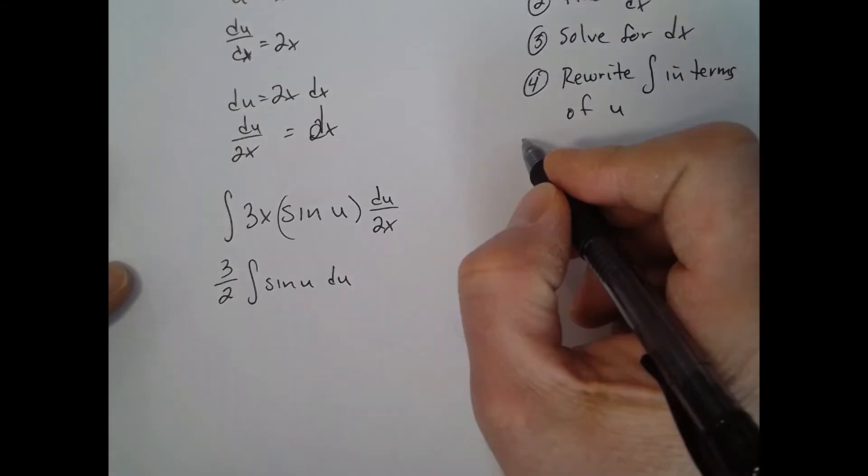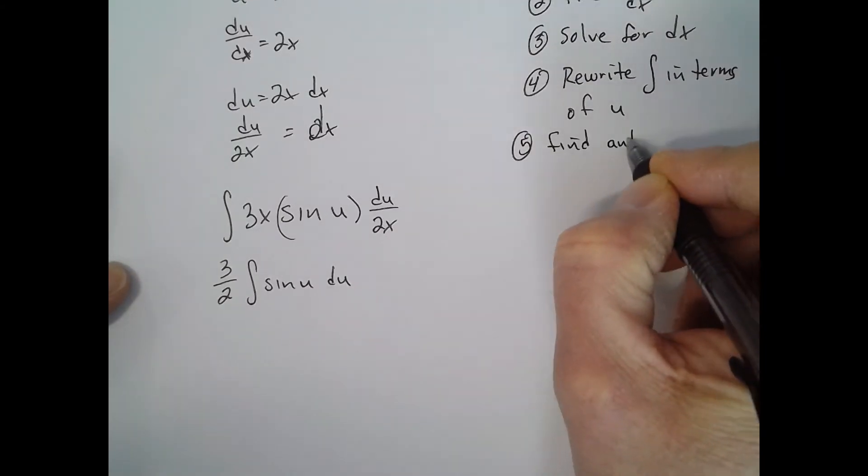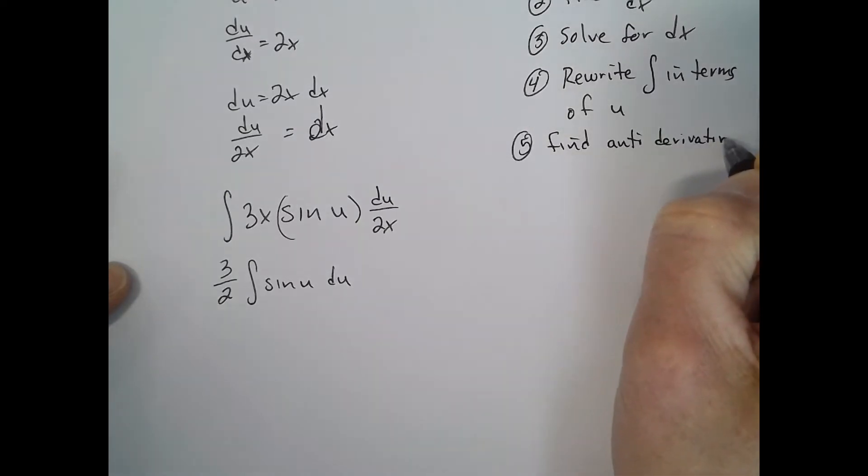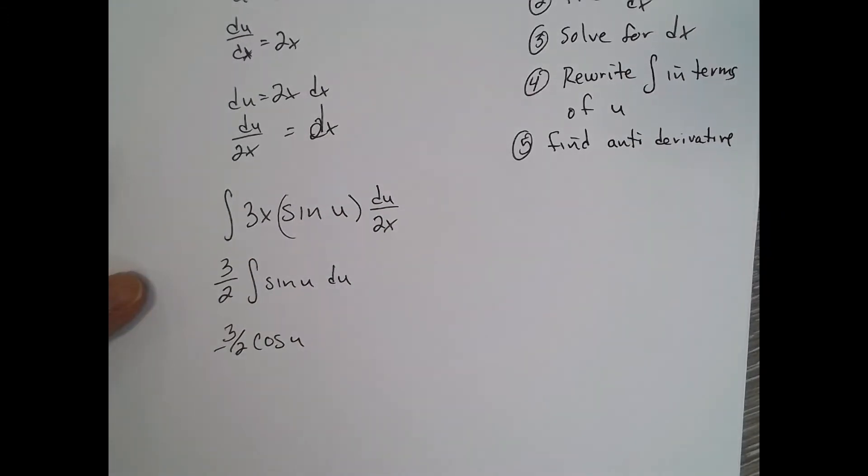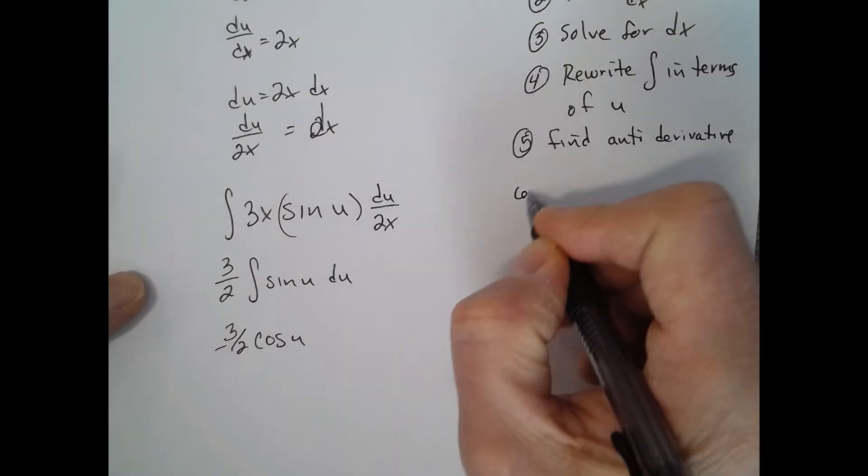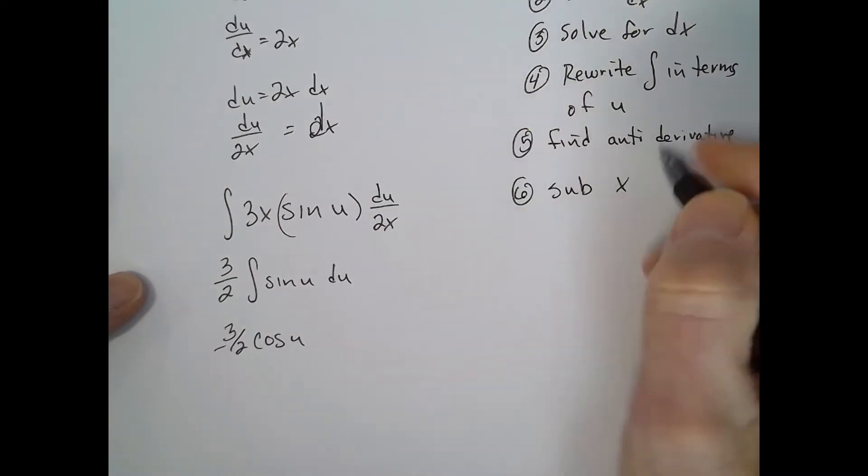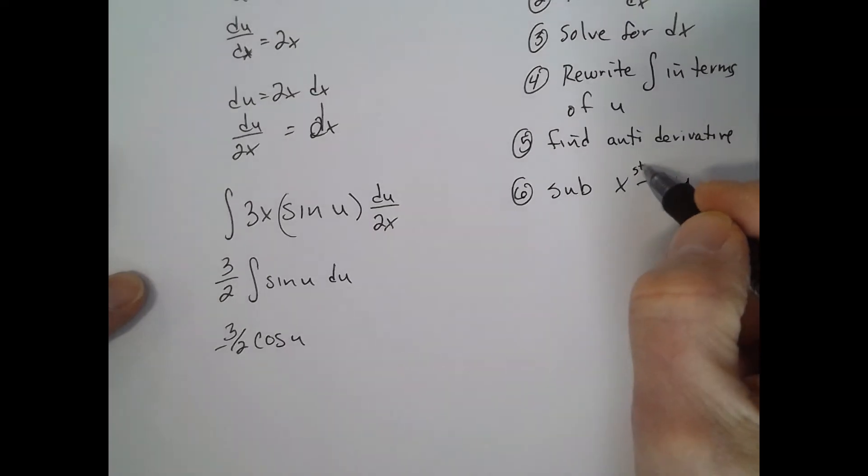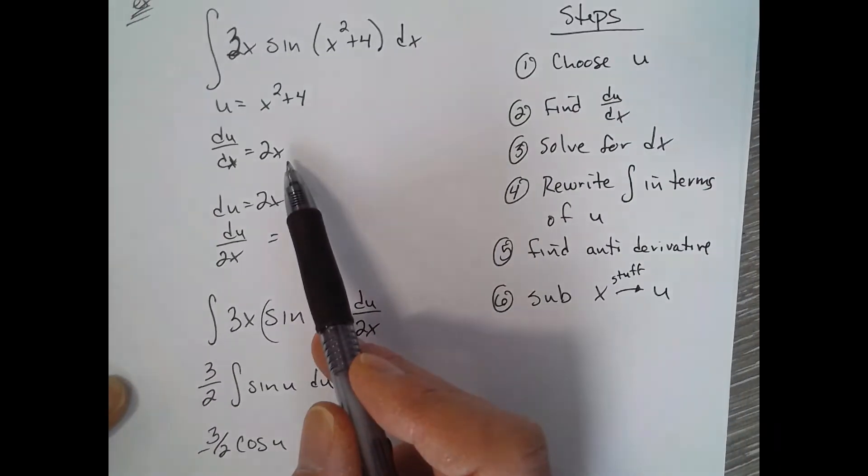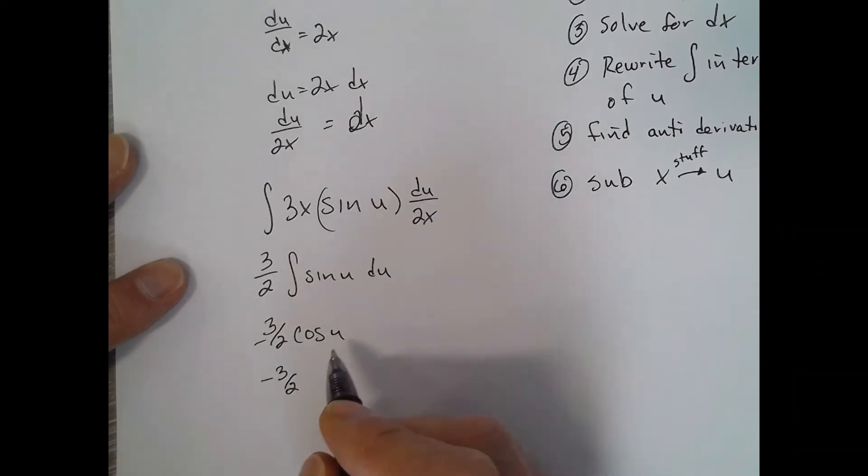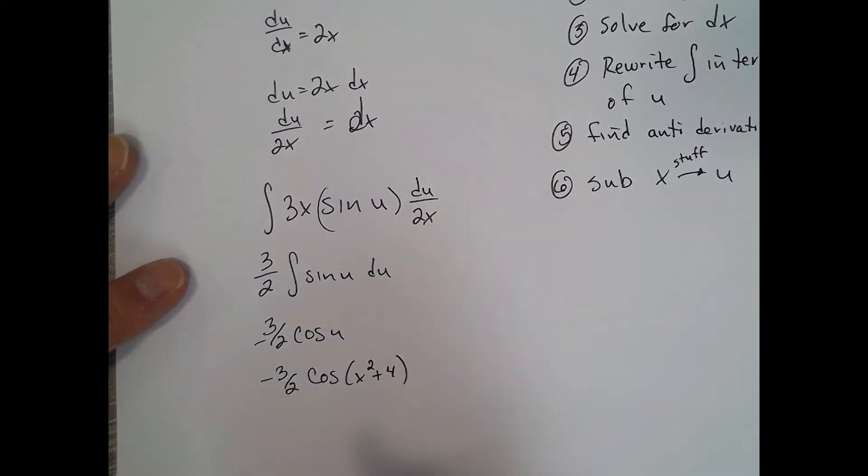So rewrite in terms of u, we did that, and then find the antiderivative. The antiderivative of sine u is negative cosine u, so it's negative 3 halves cosine u. Then sub the x stuff back in for u. Your u we said was x squared plus 4, so our answer is negative 3 halves cosine of x squared plus 4, and since it's an indefinite integral, we can do plus c.